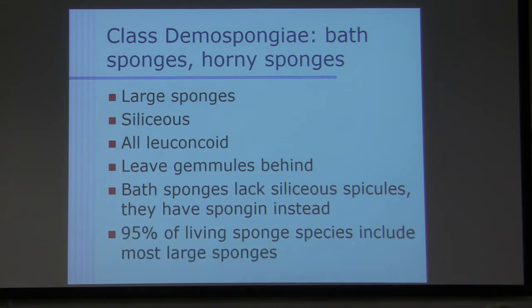And of course, they have a bad odor too sometimes. So that's why they are not good meal for other animals because of the spicules. Spicules, of course, the bath sponges do not have spicules. They are spongin instead. What else? 95% of living sponges include most large sponges are in this class, in the class Demospongiae. About 95% of the sponges that have been discovered so far.